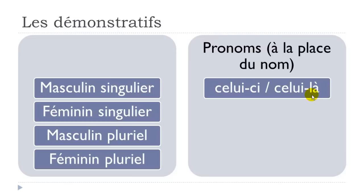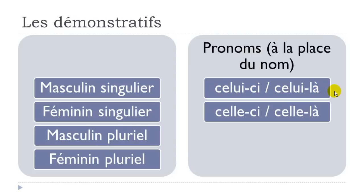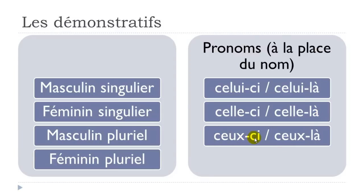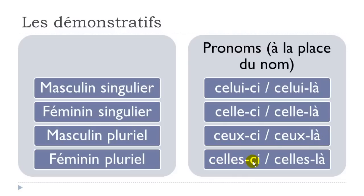In English it would be 'this one.' In French it's a bit more tricky because we have 'celui' and then '-ci' or '-là.' Normally '-ci' comes first (nearest), and '-là' comes next (not the nearest). Same thing with the feminine form: 'celle-ci,' 'celle-là.' For the masculine plural: 'ceux-ci,' 'ceux-là' — remember the final X is not pronounced. Feminine plural: 'celles-ci,' 'celles-là' — don't pronounce the final S.